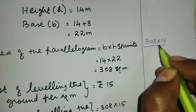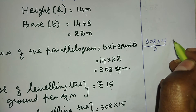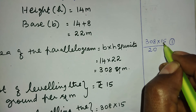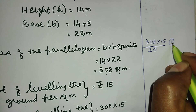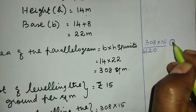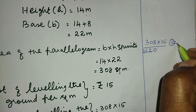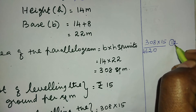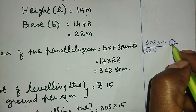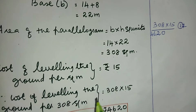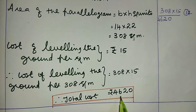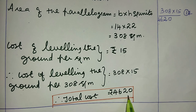Multiplying 308 into 15: 15 times 8 is 120, carry 12. 15 times 0 is 0, plus 12 is 12. Then 15 times 3 is 45, plus 1 is 46. Therefore, the total cost of leveling the ground is rupees 4620.